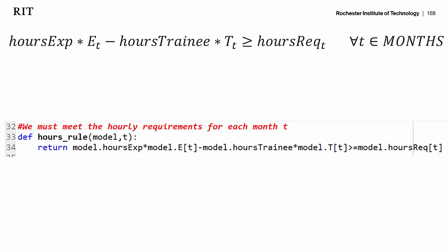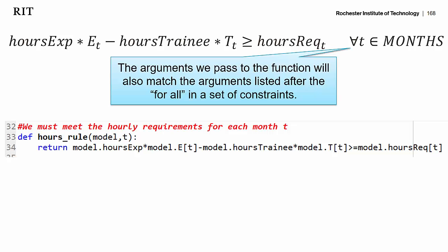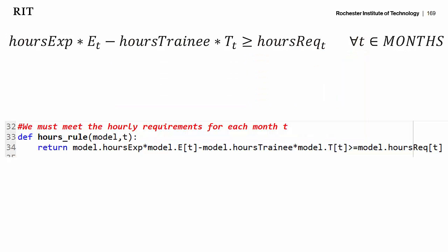Another way to figure out what we need to give to a constraint function is to look directly after the for-all symbol — there'll be a list of one or more arguments. Here we see right after the for-all symbol, we see a t. So we know we need to pass our hours_rule a value for t in order to make a specific instance of this constraint. In the background, Pyomo will pass an actual number, for example a one for month one, so this t will be a one throughout the constraint.